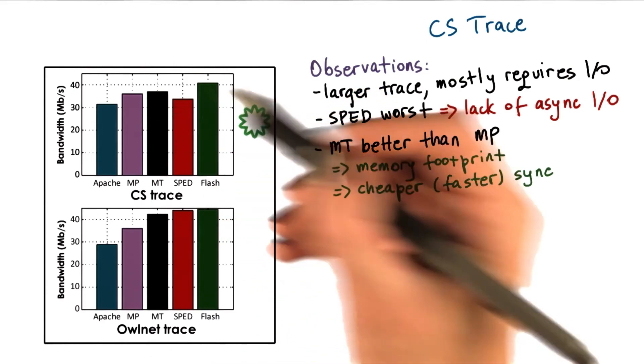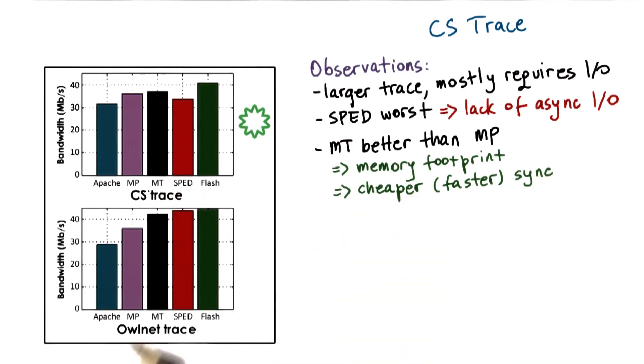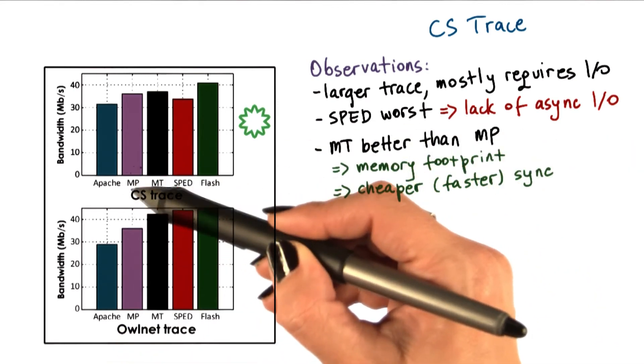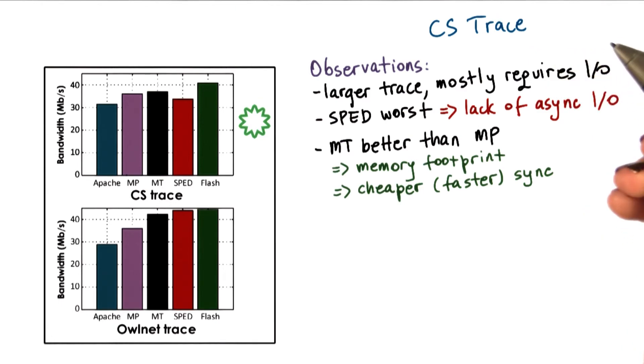In addition, the synchronization and coordination and context switching between threads in a multithreaded implementation is cheaper. It happens faster than among processes in a multiprocess implementation.